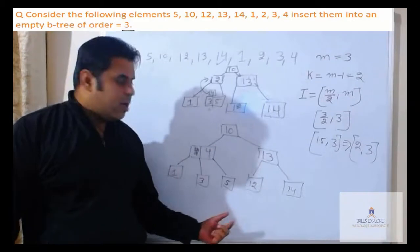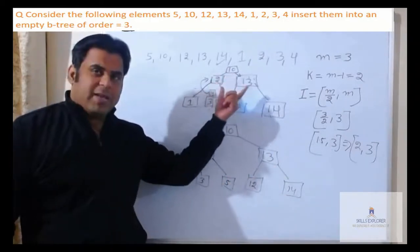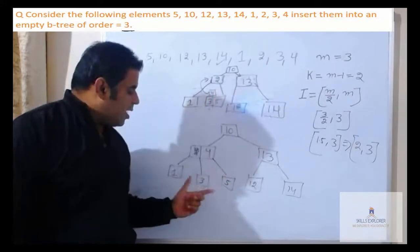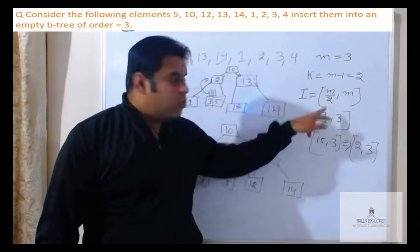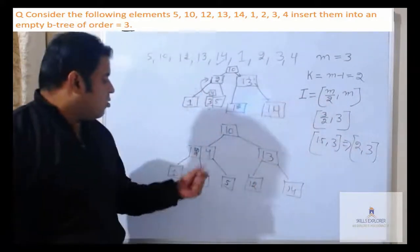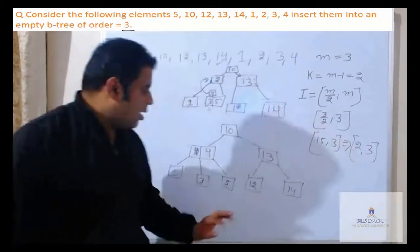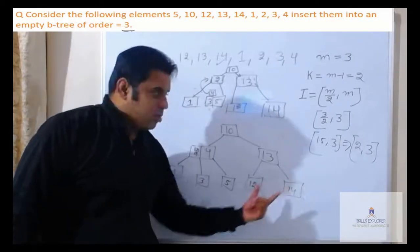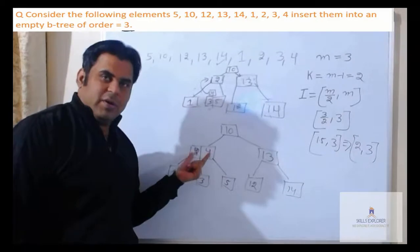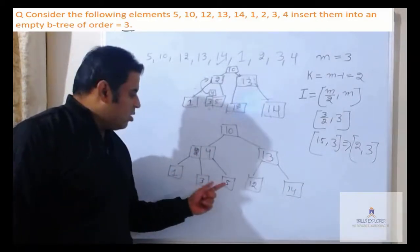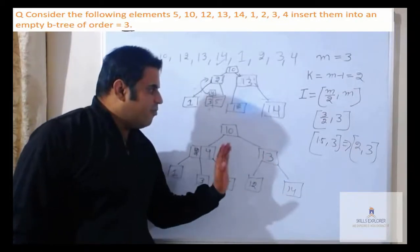Hum ne starting se last tak proceed kiya — sab nodes same level par aaye. Saari properties follow ho rahi hain: root ke paas at least two children hain, all leaf nodes are on the same level, internal nodes ke minimum 2 aur maximum 3 children hain. Jitne children honge unki parent ki keys ek kam hongi — for example 3 children to 2 keys, 2 children to 1 key. Yeh bhi property fulfill ho gayi. So I hope yeh aapko clear ho gaya hoga.